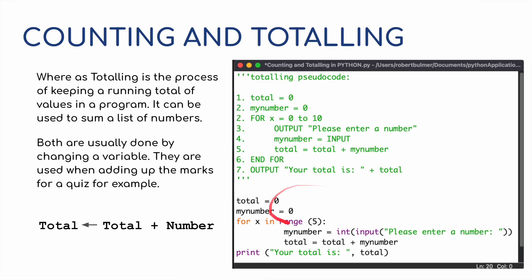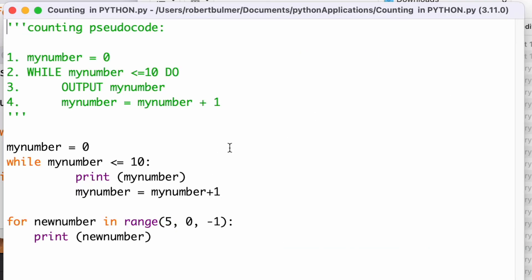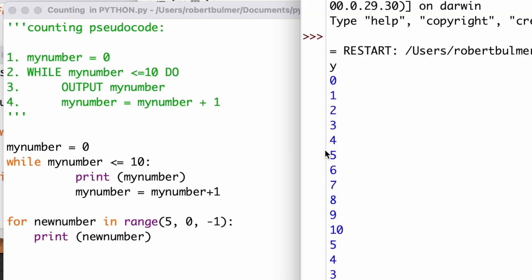In this case, I've got some pseudocode here. The total is zero, my number equals zero and then I've got a for loop for x equals zero to 10, so it's going to count from zero to 10, it's going to do this loop 10 times. Output please enter the number, the person inputs their number, that number is added to the total. So the total appears set at zero. When a person enters their number it will add it to the total and it will keep adding to the total until it's looped through 10 times and it's going to end the for loop. Then it will output your total is and it will have added up those 10 numbers. I've rewritten this in Python and I'll run this for you.